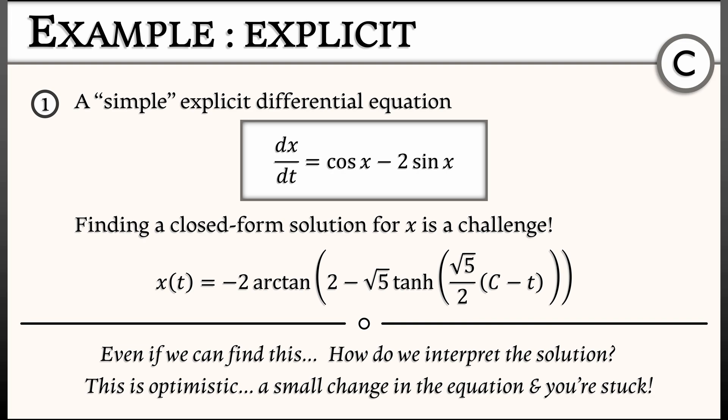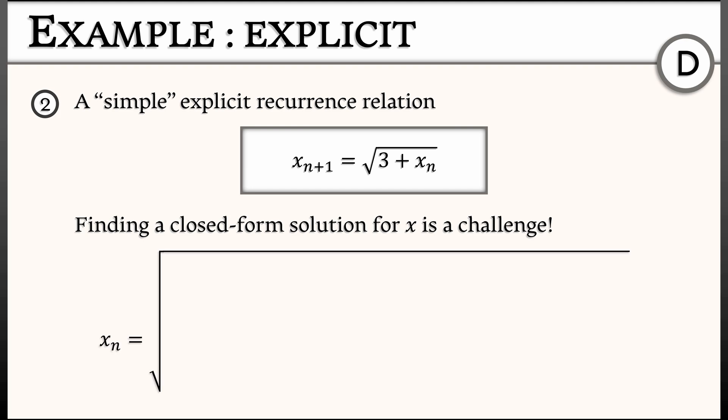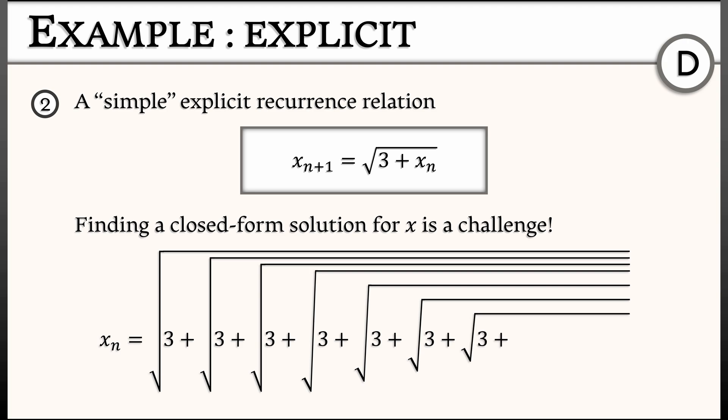That's a continuous time example. What happens if we look in discrete time? Here's a simple example of a discrete time dynamical system — something called a recurrence relation. It is of the form x_{n+1} equals the square root of the quantity 3 plus x_n. What we're looking for is a solution x as a function of discrete time n. Finding an explicit closed form solution is not really the challenge — I could just start with an initial condition x_0, and this gives me an instruction set: x_1 is square root of 3 plus x_0, then x_2 follows by plugging in x_1, and I keep going. Finding that closed form solution is not the challenge.